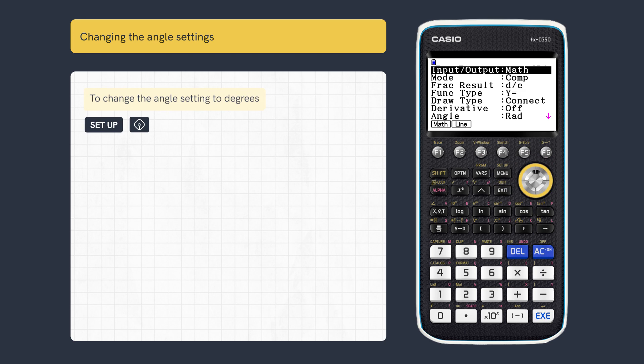We can also use this method in calculations. Sometimes it may be useful to change the angle setting. To change from radians to degrees, press Setup and scroll down to Angle. Select Degrees and Exit.